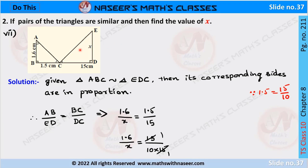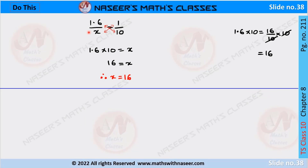Two similar triangles are given, then we have to find the value of x. Triangle ABC is similar to triangle EDC. So we can write AB by ED is equal to BC by DC. Now we substitute the given values: 1.6 by x is equal to 1.5 by 15. 1.5 is written as 15 by 10. We cancel 15 and 15, so we can write 1.6 by x is equal to 1 by 10. After cross multiplication, 1.6 into 10 is equal to x. 1.6 into 10 is 16, therefore we get x is equal to 16.